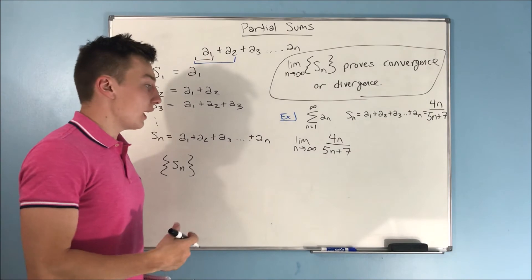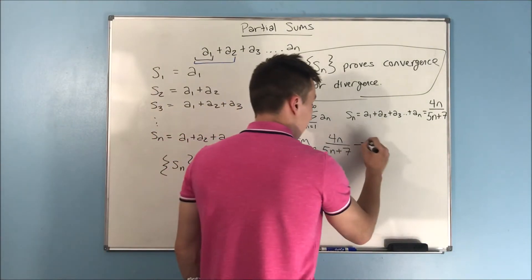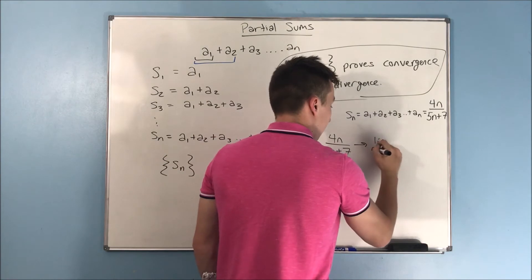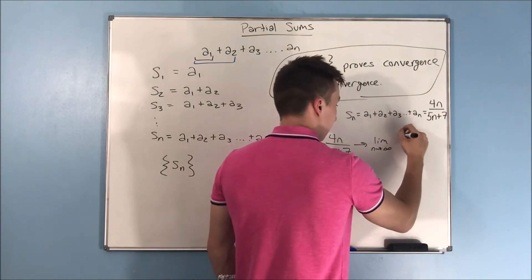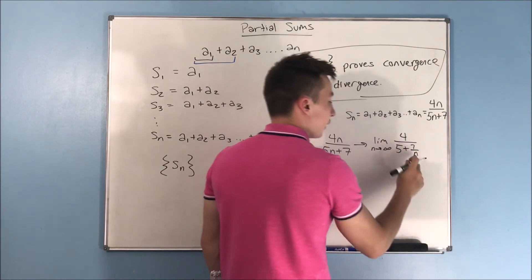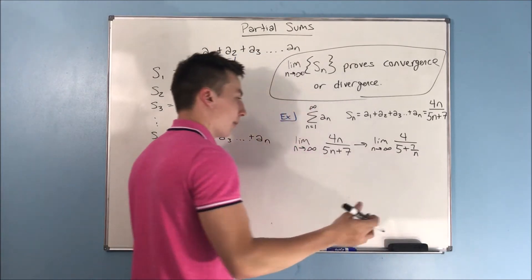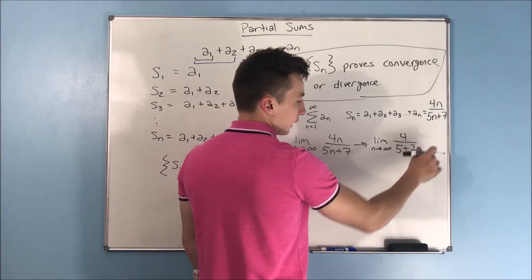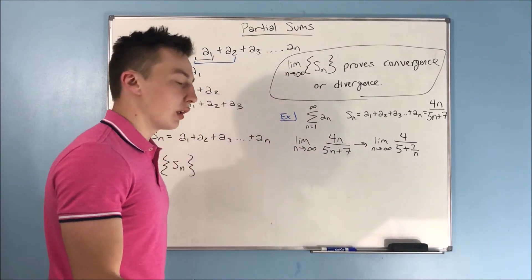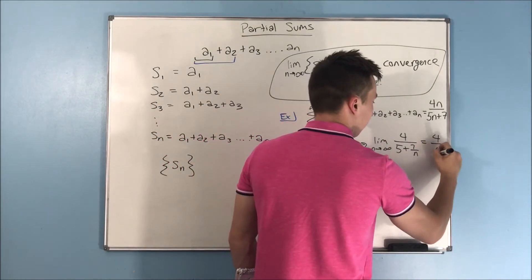Well, how do we do that? You can use L'Hôpital or you can just do a little bit of algebra and divide everything by n. So, you would end up with 4 over 5 plus 7 over n, which, of course, if we have a super, super big number, that's just going to make this fraction basically go to 0. So, this ends up being just 4 over 5.